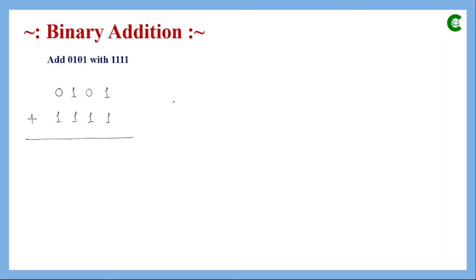Let's get started. First we will begin with binary addition and we will be adding two numbers. Both numbers have four digits or four bits. Before we can add these two numbers we have to learn the rules of binary addition. This is the relationship between the decimal and binary number systems, where in binary numbers are represented by two bits, and in decimal we consider values from 0 to 3.